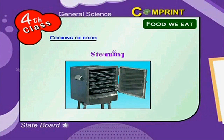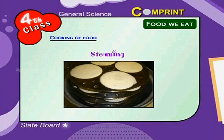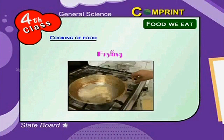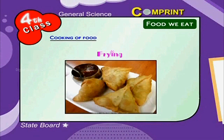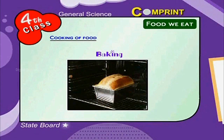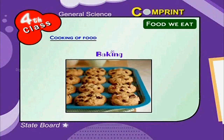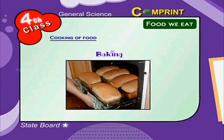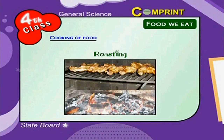Boiling: Rice, dals, and vegetables are cooked by this method by adding sufficient quantity of water. Steaming: The steam that comes from boiling water is used for cooking — for example, idlis are cooked by this method. Frying: Cooking in heated oil or ghee is called frying — for example, puris and samosas. Baking: The process of cooking by hot air is called baking — for example, biscuits, cakes, and bread are made by this process.